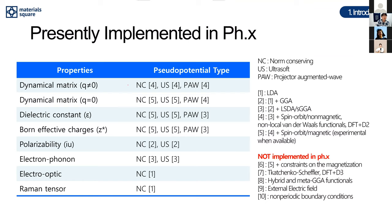There are also some limitations regarding pseudopotential types. For example, to calculate polarizability, only norm-conserving (NC) or ultrasoft (US) potentials can be used. NC potentials support LDA and GGA, while US potentials with LDA or GGA can also be used. You should be aware of these limitations when running phonon calculations in Materials Square.